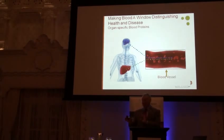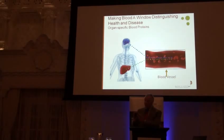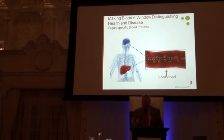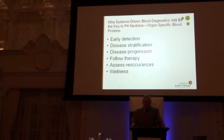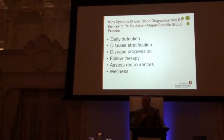Since every disease perturbs different combinations of networks, there'll be a unique fingerprint for each disease — so the blood can distinguish health from disease, and if disease, which disease. We've demonstrated that these blood organ-specific protein markers can do early detection: we can detect disease eight weeks before any clinical signs appear.